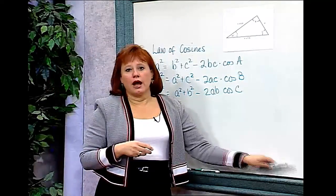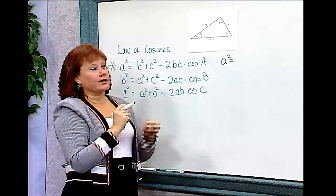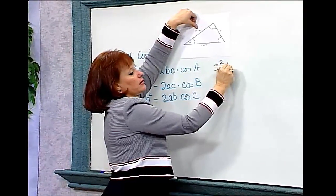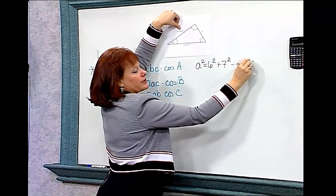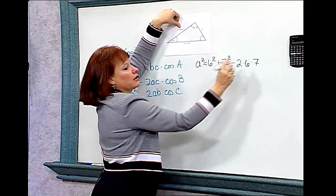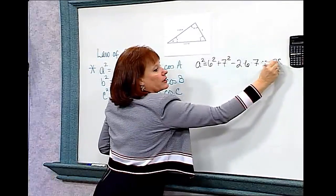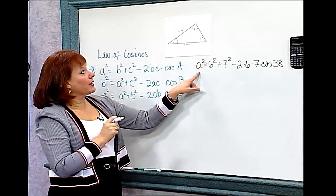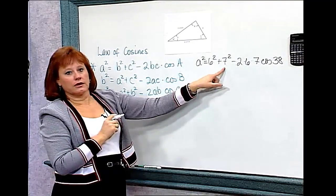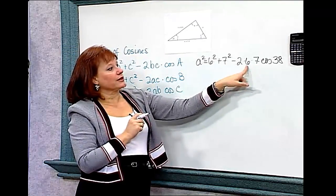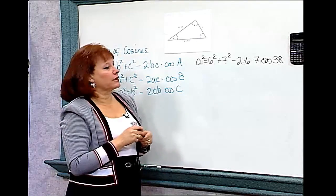So in this problem, I want to find A, so I'll take A squared and look at the other sides. It's 6 squared plus 7 squared, minus 2 times 6 times 7, times the cosine of the angle that's between them — the cosine of 38. To review: A squared equals the squares of the other two sides added together, minus 2 times the product of the sides (2 times 6 and 7), times the cosine of the angle between them, which is cosine of 38.